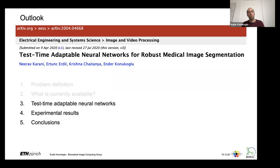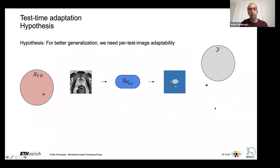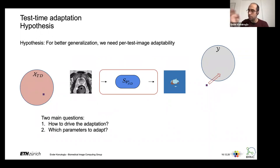Test-time adaptive networks are motivated by these unsupervised segmentation clustering algorithms from neuroimaging. The setup: the target-domain image segmentation is off, so we hypothesize we can update the segmentation network per test image to make the segmentation move into the plausible set of segmentations. Two key questions: how do we drive the adaptation, and which parameters should we adapt?